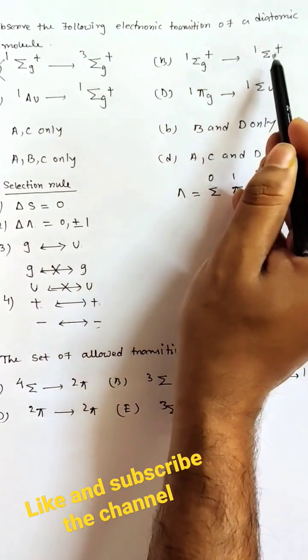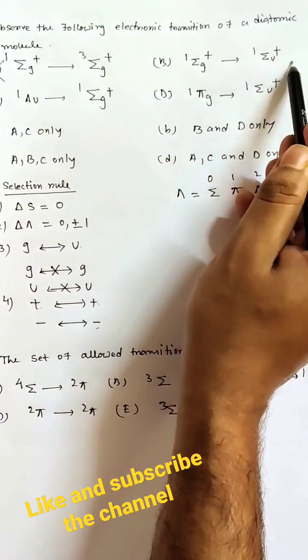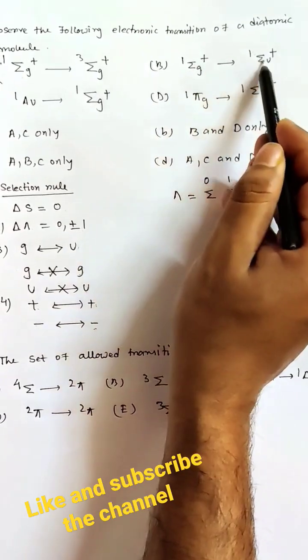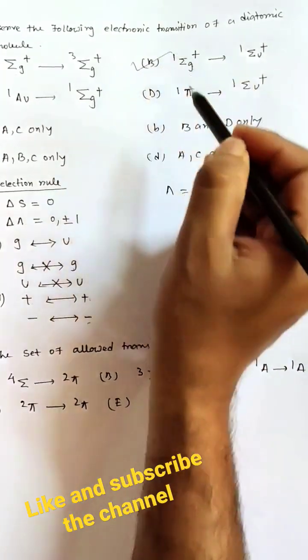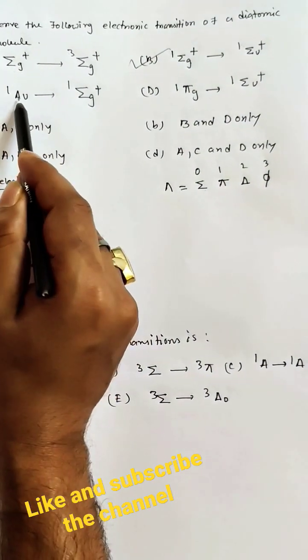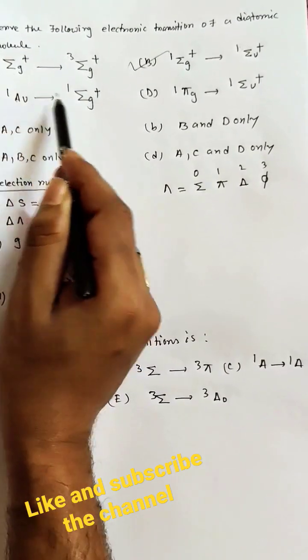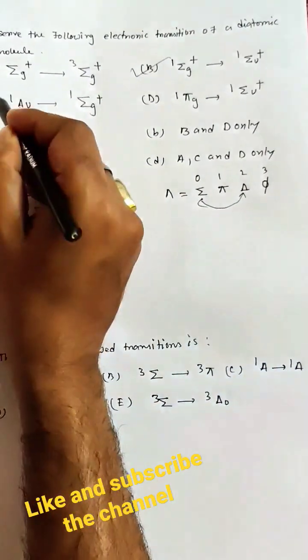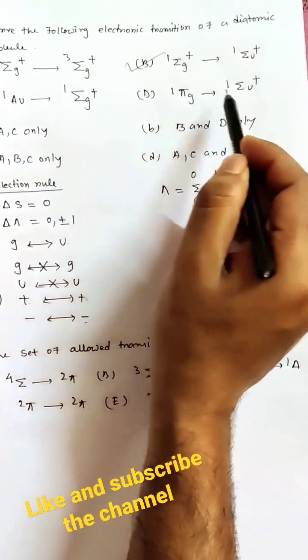For option B, one plus to one plus is possible, g to u is also possible, and del lambda value is 0, so this is an allowed transition. The difference between lambda values in option C is plus 2, so C cannot be the answer.